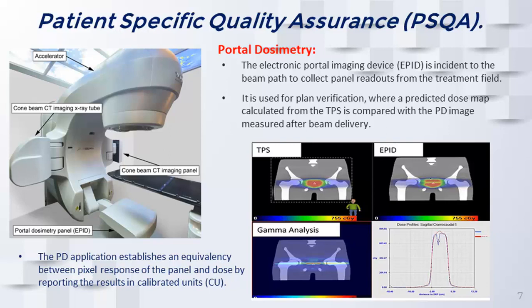We compared those measurements with portal dosimetry, which is typically viewed as a faster method for measurement. Essentially, each linac has an electronic portal imaging detector in-line with the beam plane. In this case, the image shown is a TrueBeam — not the Halcyon, where it would be enclosed within the unit — but we compared portal dosimetry for the Halcyon.